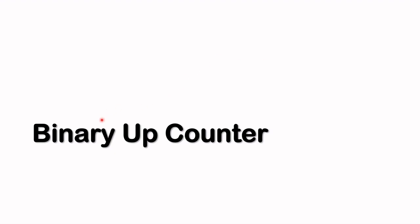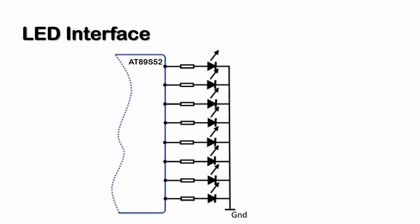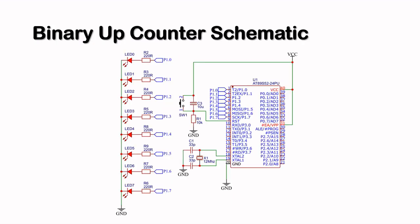Now we come to the part where I'll show you how to build a binary up counter. For this project my preference is to use the current sourcing method — you may want to try the current sinking method if you wish, but for this project I'll be using current sourcing. Here's the binary up counter schematic.